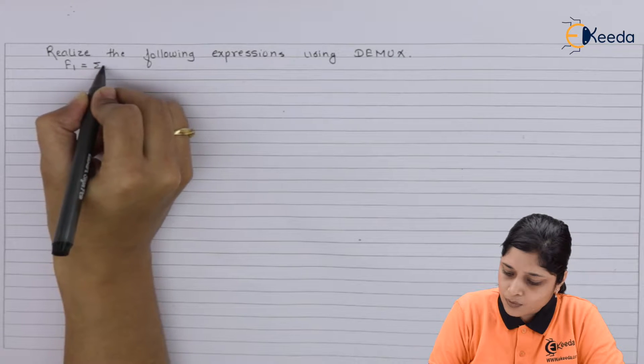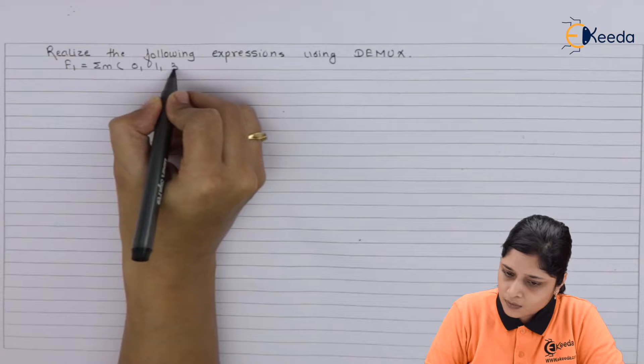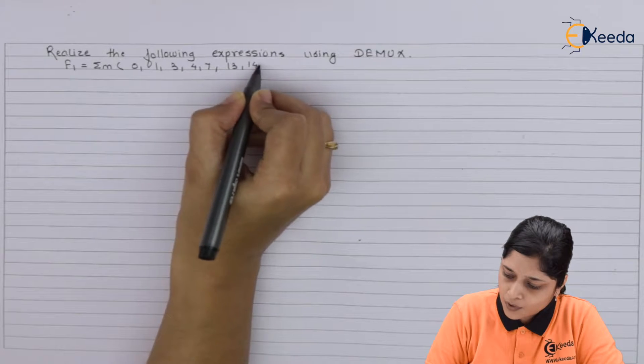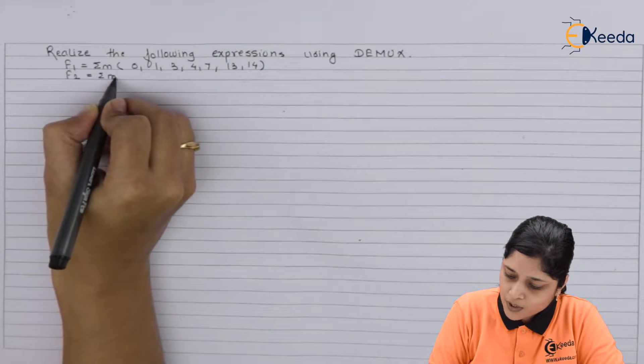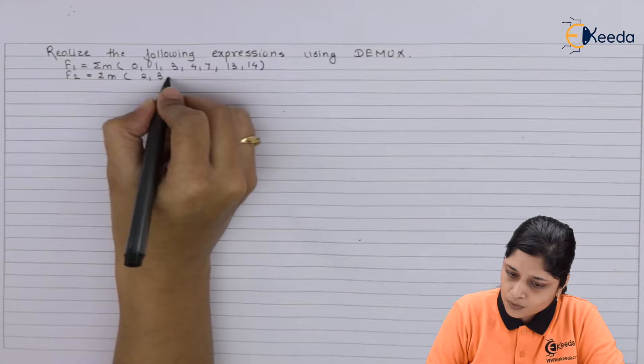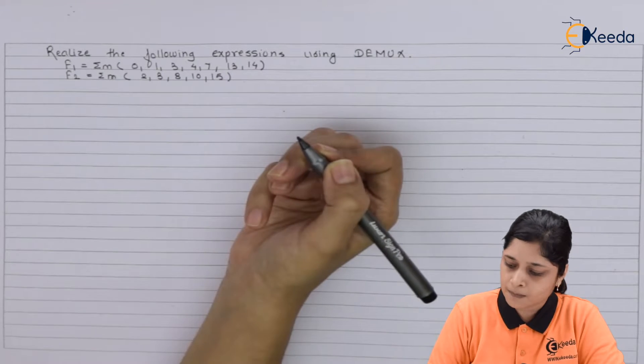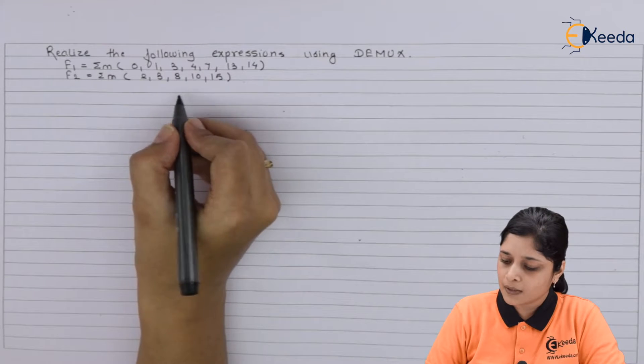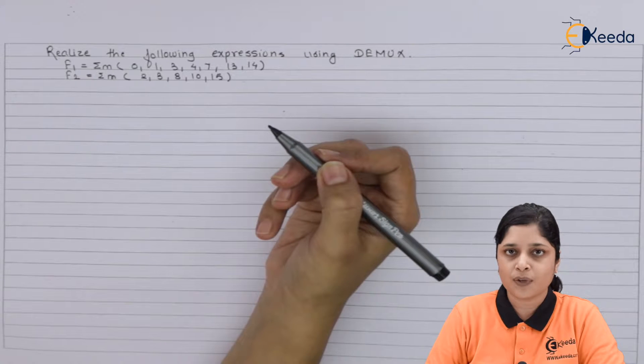Your expressions are f1 equals to summation m(0, 1, 3, 4, 7, 13, and 14), and f2 equals to summation m(2, 3, 8, 10, and 15). So here in this example you have two functions that you have to realize.